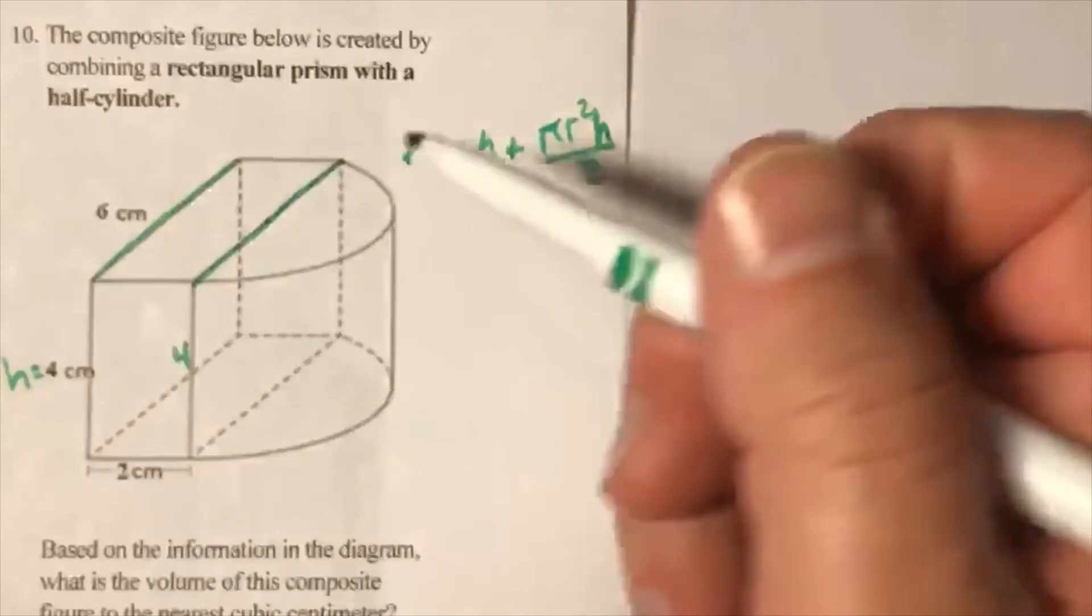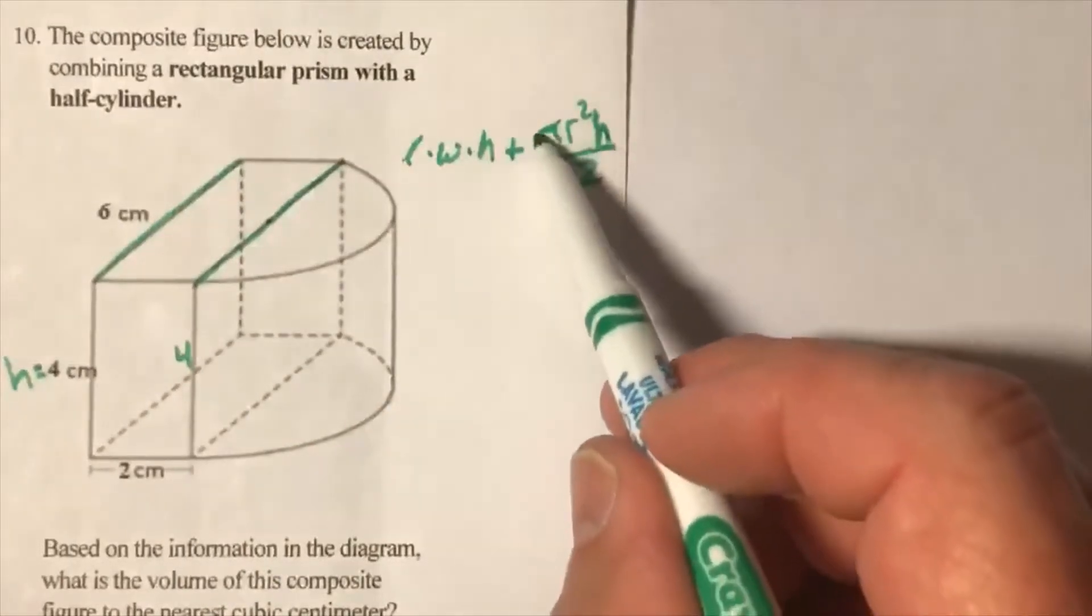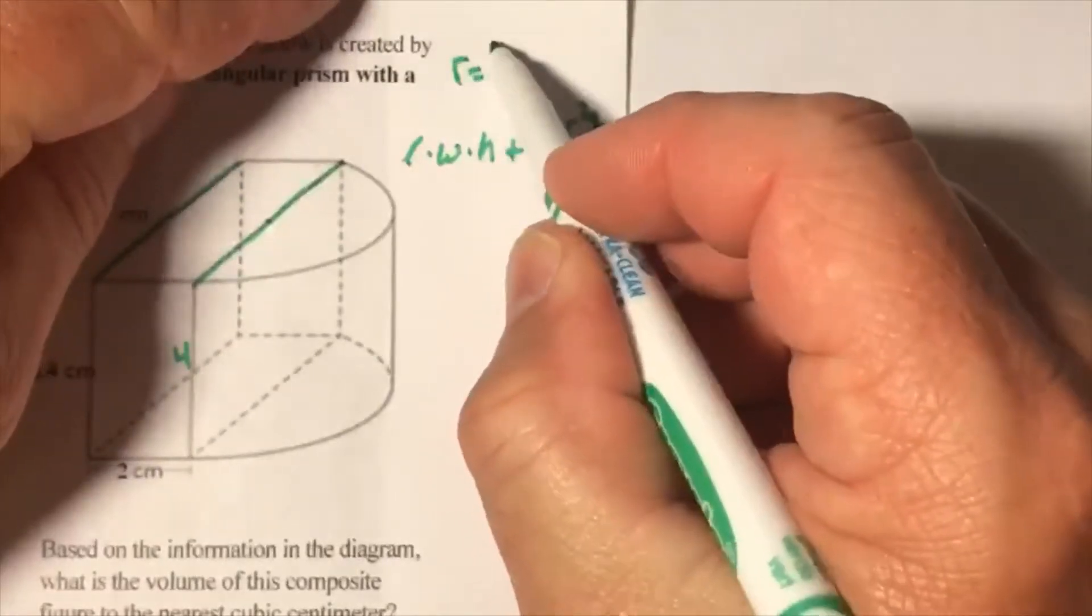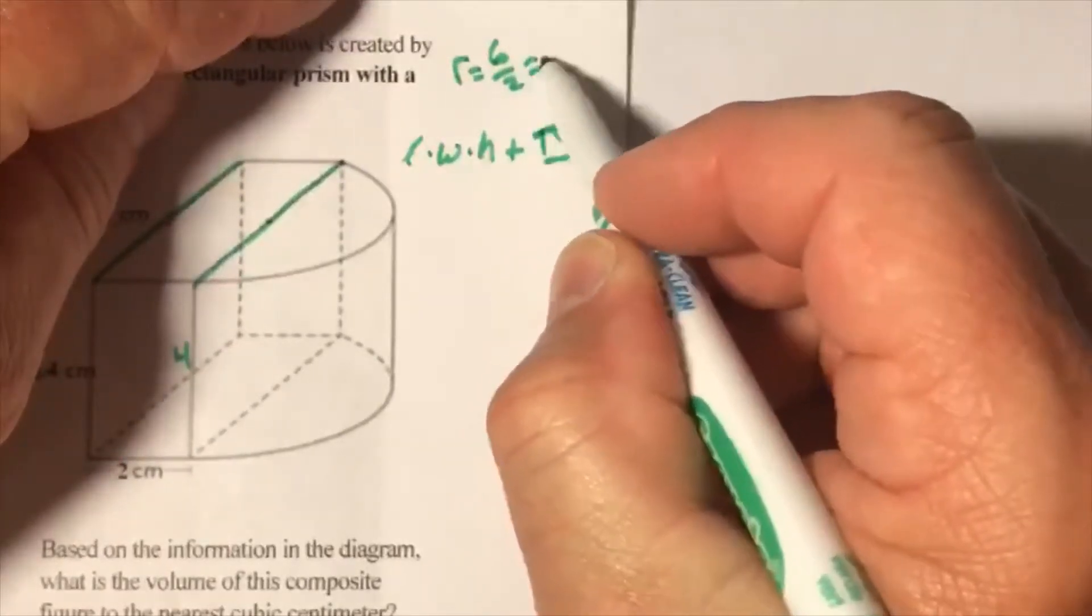Your diameter. We have to do something to the diameter to get the radius. Let's just put a note over here. Radius is going to be 6 divided by 2. That's 3.